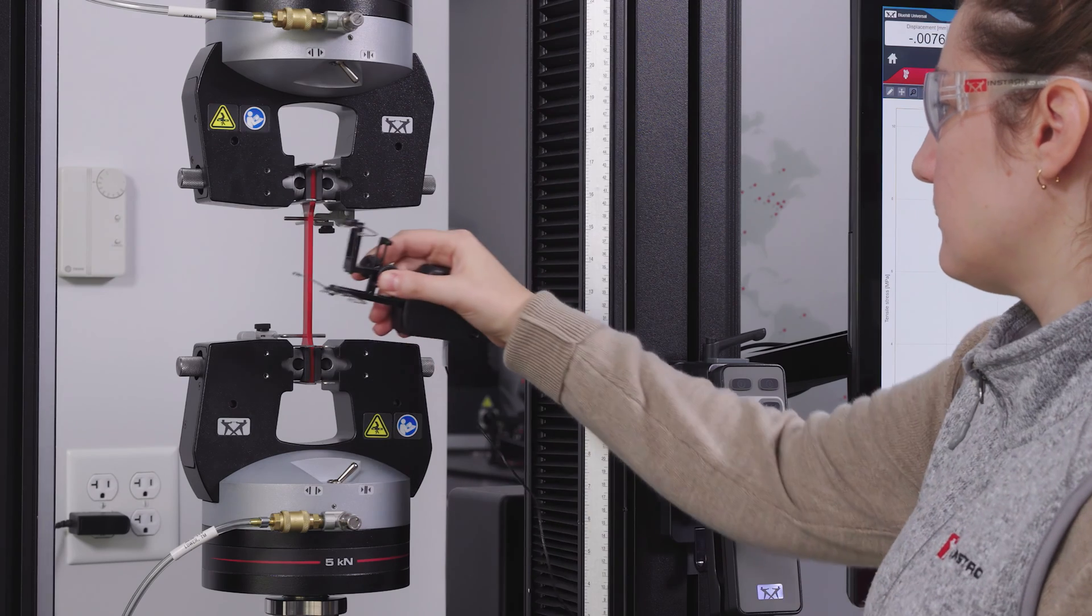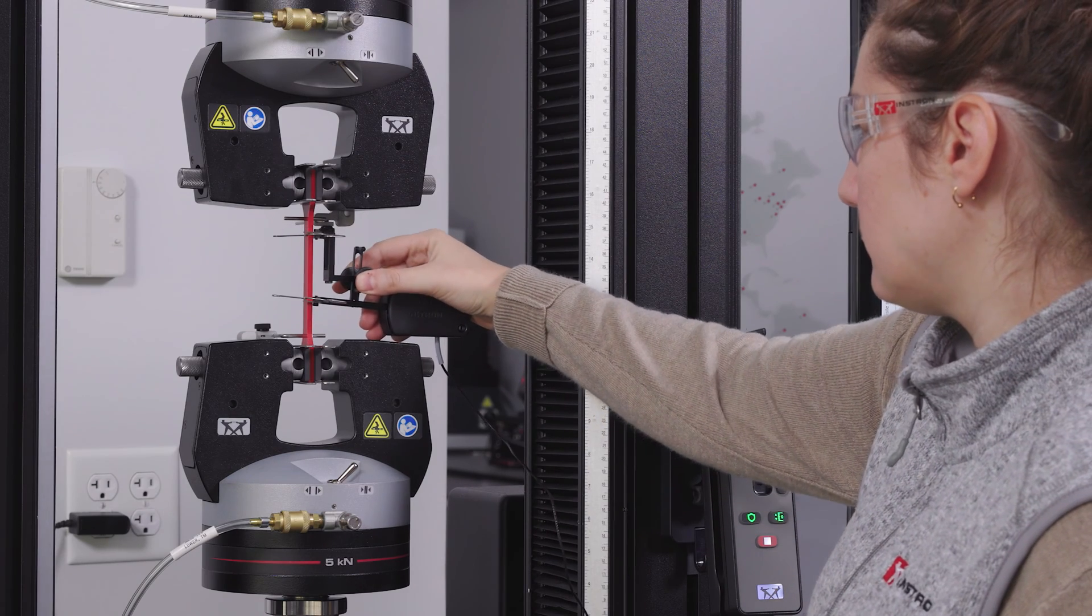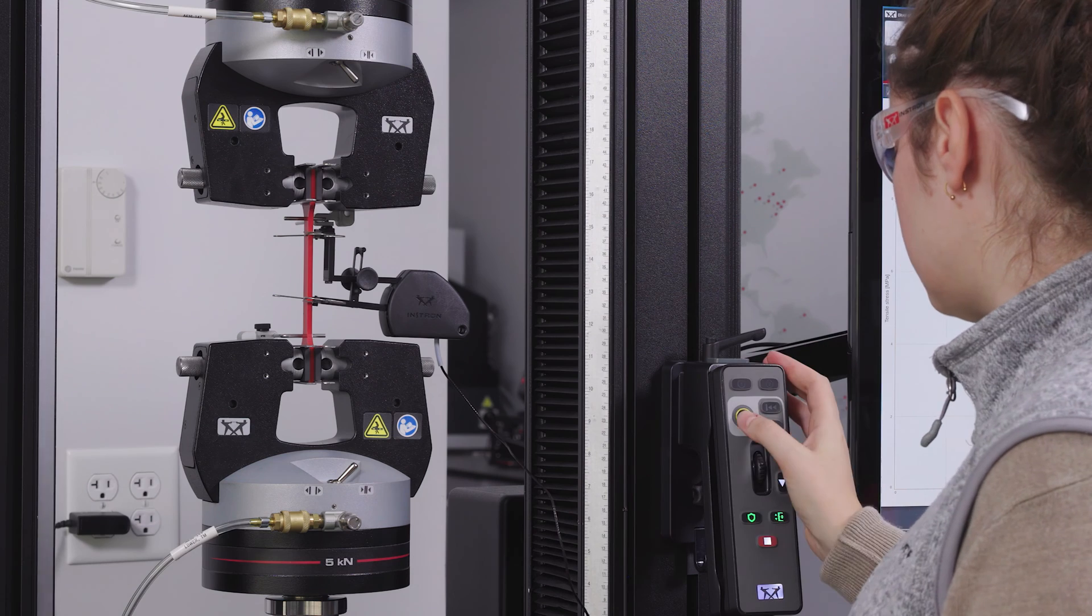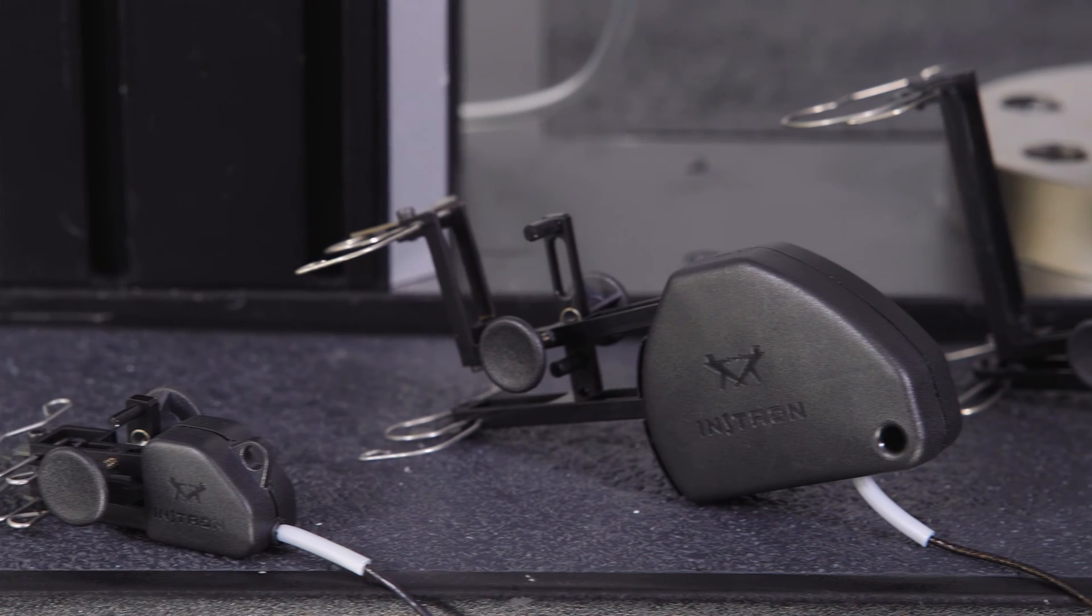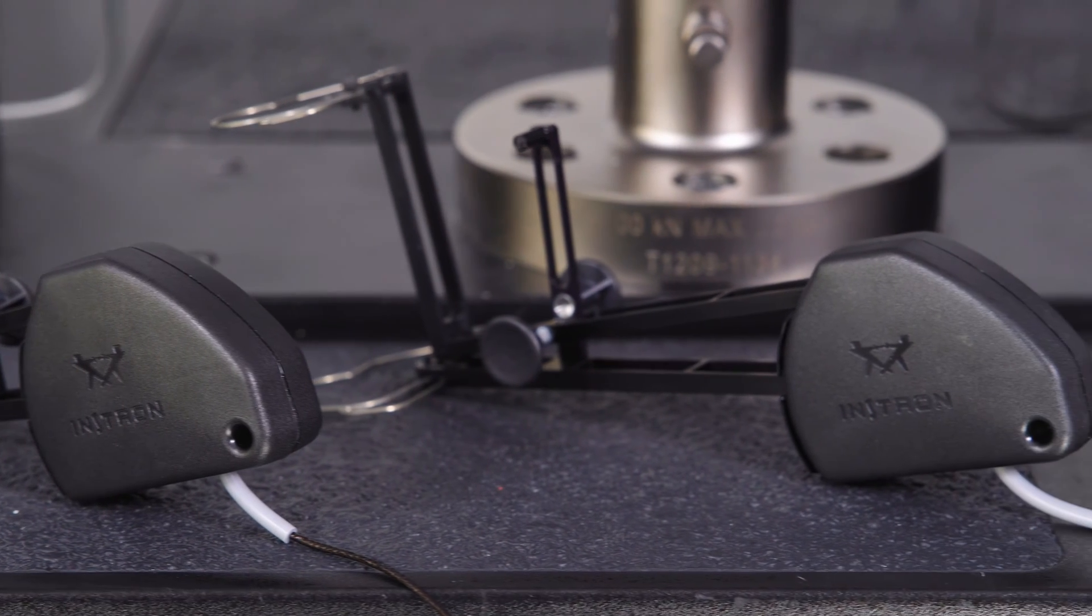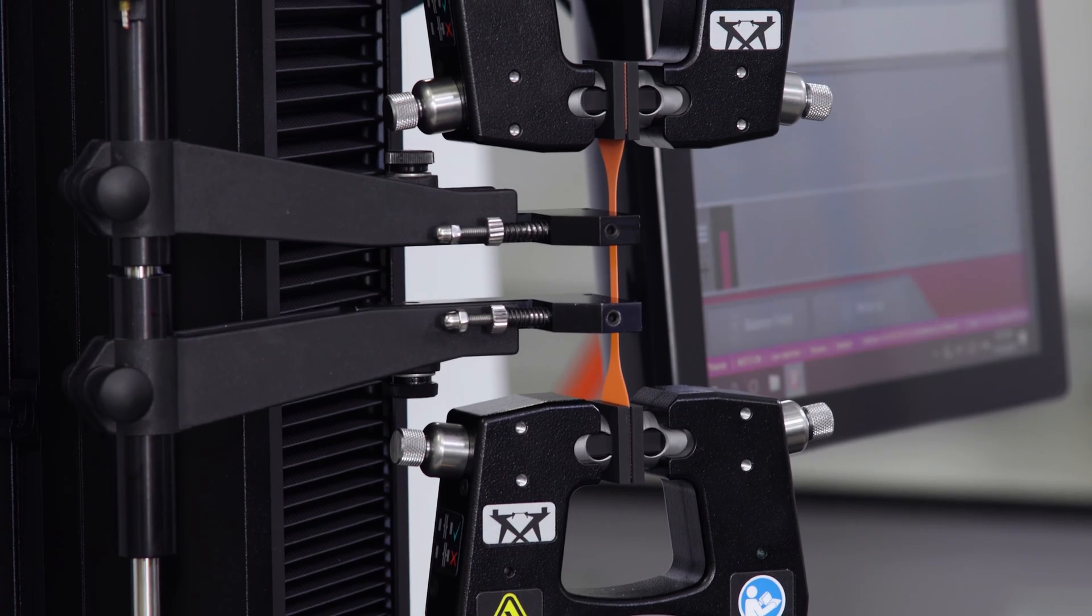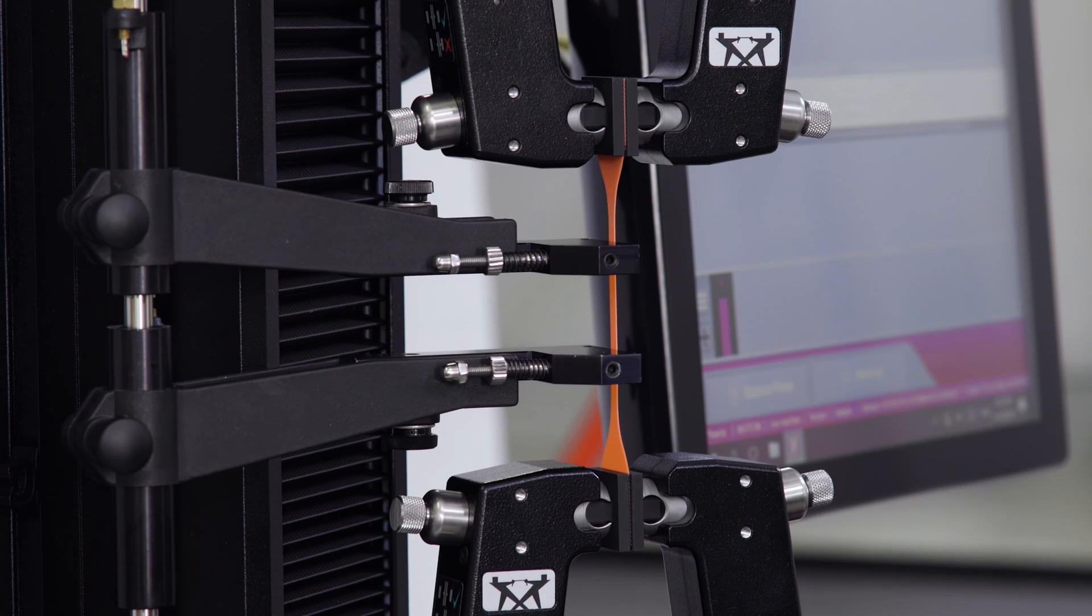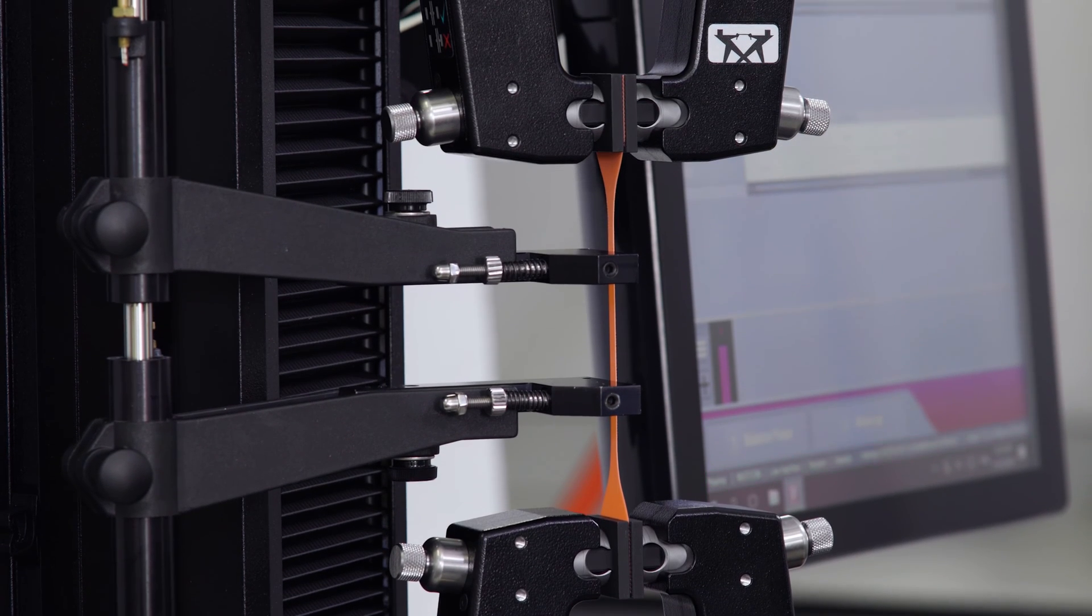Clip-on extensometers are cost effective options that are applied manually to each specimen by a test operator. These come in a variety of sizes but are generally restricted to materials that exhibit less than 100% strain. Manual contacting options are also available for elastomers and other high elongation materials.